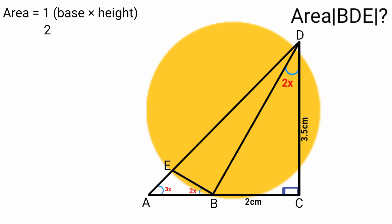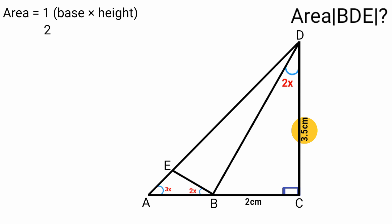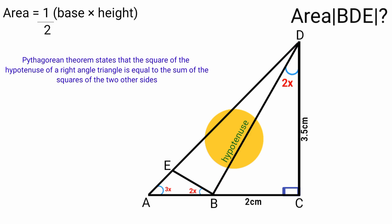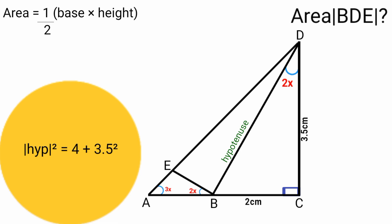Since triangle BCD is a right-angle triangle and we have the length of this side as 3.5 centimeters and this side as 2 centimeters, we can use the Pythagorean theorem to find the hypotenuse. The Pythagorean theorem states that in a right-angle triangle, the square of the hypotenuse equals the sum of the squares of the other two sides. The hypotenuse faces the right angle, so: hypotenuse² = 2² + 3.5² = 4 + 12.25 = 16.25.